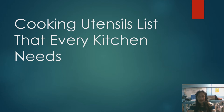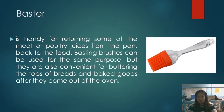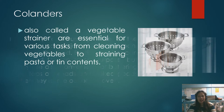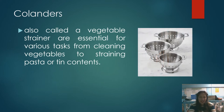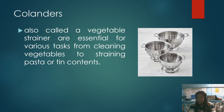Here is the list of cooking tools every kitchen needs. We have the baster, which is handy for returning meat or poultry juices from the pan back to the food. Basting brushes can also be used for buttering the tops of breads and baked goods after they come out of the oven. We also have colanders, also called vegetable strainers, which are essential for cleaning vegetables and straining pasta.